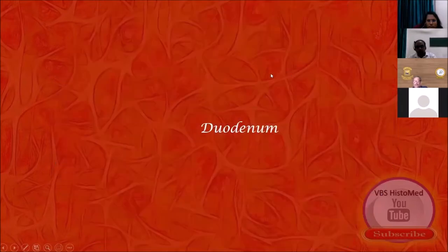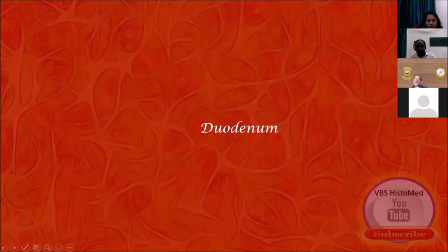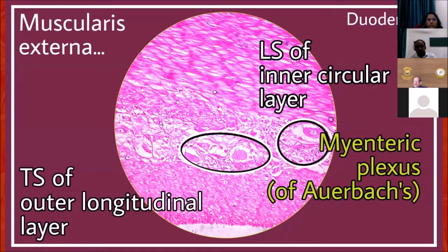Next, duodenum. Conventionally, the signature feature we talk about is Brunner's glands, and we say identify it and give two reasons. The answer would be: long finger-like villi and Brunner's glands.